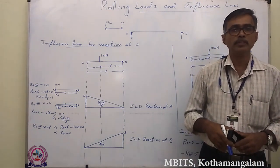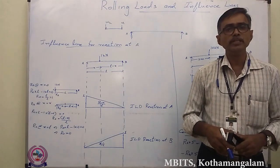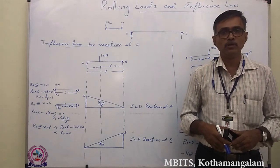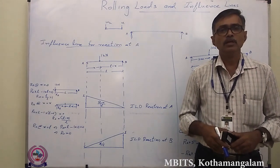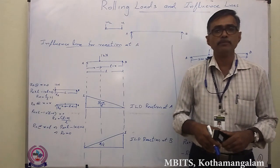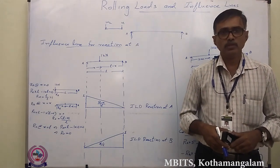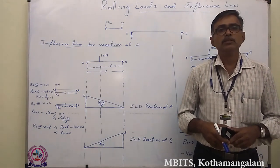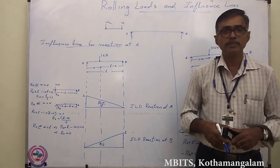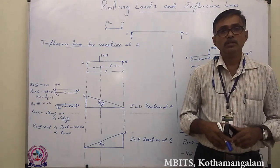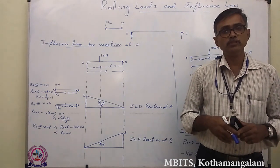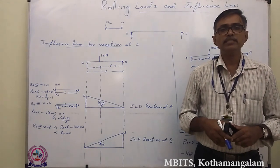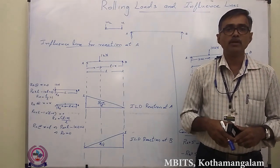Rolling Load is nothing but a Moving Load. For example, a heavy vehicle moving over a bridge is an example of a Moving Load. The load of the vehicle is transferred through its wheels to the deck slab of a bridge. The deck slab is supported on beams, which run in the longitudinal direction along the length of the bridge. So we have a case of rolling load coming over beams.